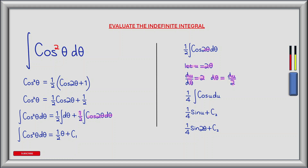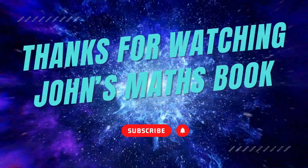So if we substitute for 2 theta and d theta we have one quarter multiplied by the integral of cos u du. The antiderivative of cos u is sine u, so we're left with one quarter multiplied by sine u plus a constant of integration c2. Substituting back in for u, since u equals 2 theta, we have one quarter multiplied by sine 2 theta plus c2. This gives us our final answer: the integral of cos squared theta d theta is equal to one half theta plus one quarter sine 2 theta plus a constant of integration c.